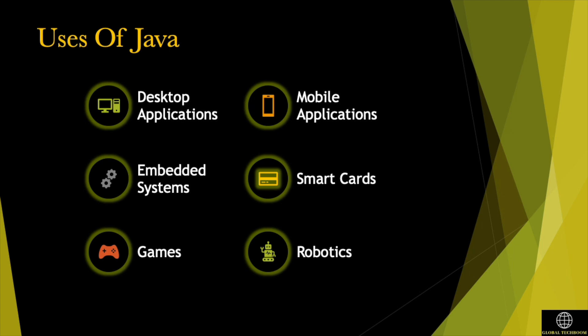Embedded systems use Java for development. Originally, Java was designed for the purpose of developing embedded systems. Android games use Java as a primary language to run on the Android platform. Java is also quite popular in some parts of robotics.